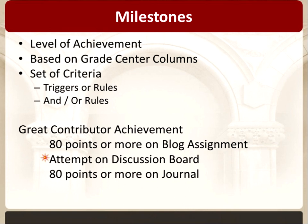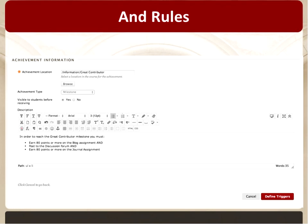The OR rule is where students can do one of the three things. They can get 80 points or more on their blog assignment, or attempt something on a discussion board, or get 80 points or more on their journal — they don't have to do all three, they just get to choose one. It's really up to you which way you want to structure this.